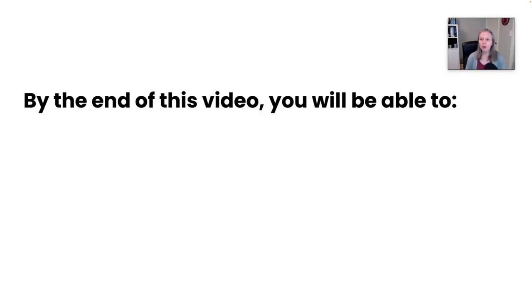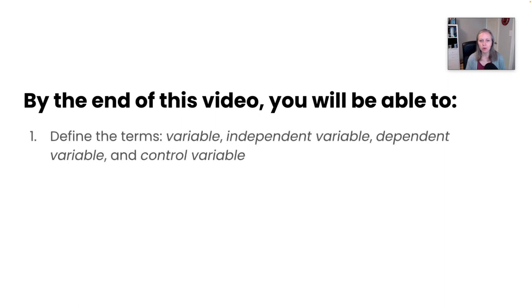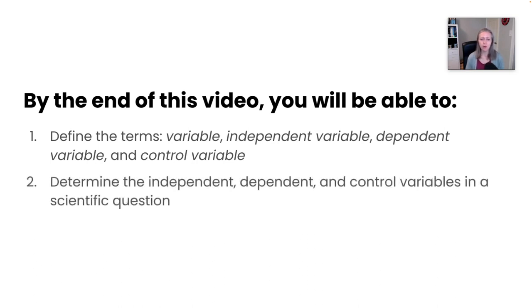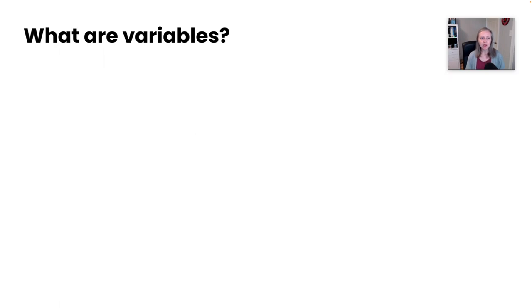In this video, we are going to take a look at variables in a scientific inquiry process. By the end of this video, you are going to be able to define the terms variable, independent variable, dependent variable, and control variable. And you're going to be able to determine what the independent, dependent, and control variables are in a scientific question.